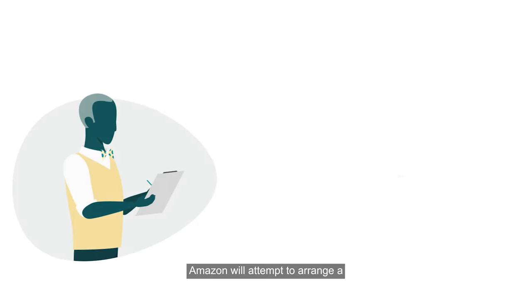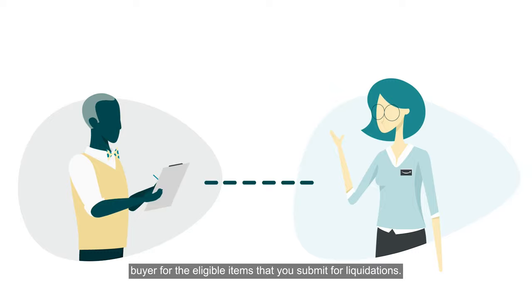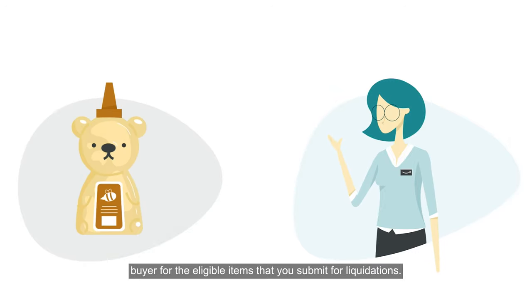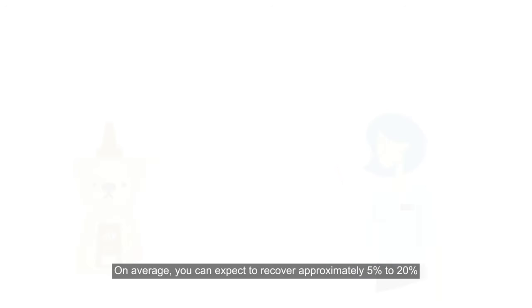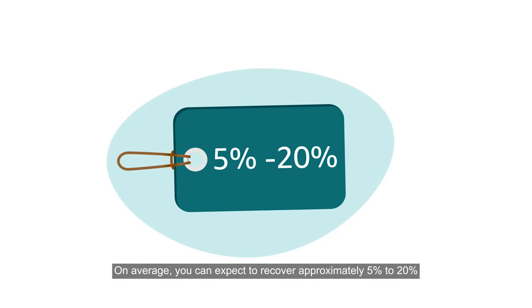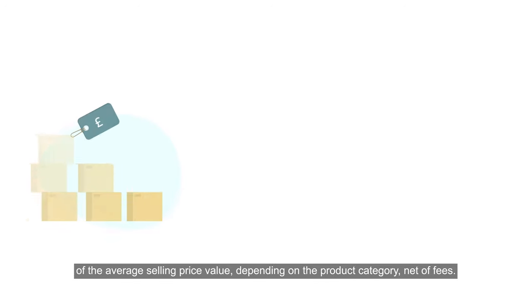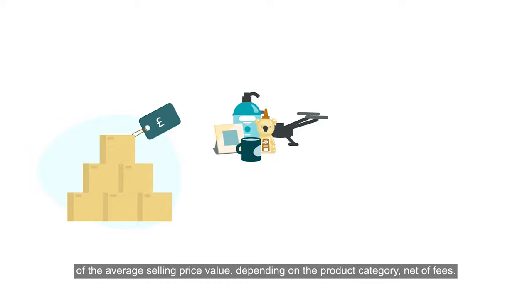Amazon will attempt to arrange a buyer for the eligible items that you submit for liquidations. On average, you can expect to recover approximately 5% to 20% of the average selling price value, depending on the product category, net of fees.